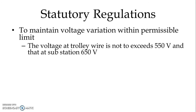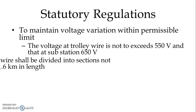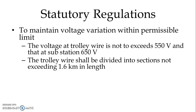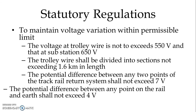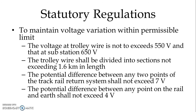We have to follow certain statutory regulations. The voltage at the trolley wire is not to exceed 550V and at the substation 650V. The trolley wire shall be divided into sections not exceeding 1.6 km in length. The potential difference between any two points of the tracked rail return system shall not exceed 7V. By observing these regulations, we can maintain the voltage variation within a permissible limit.